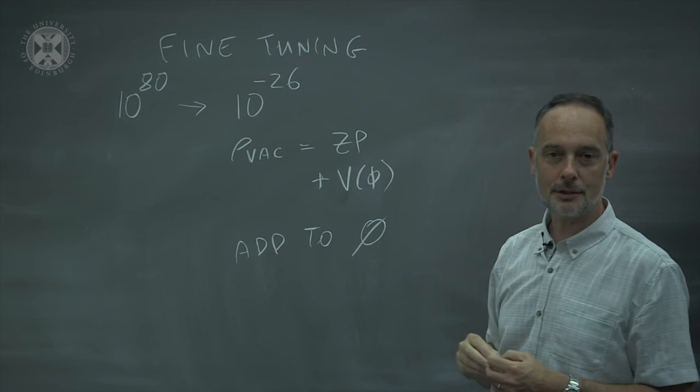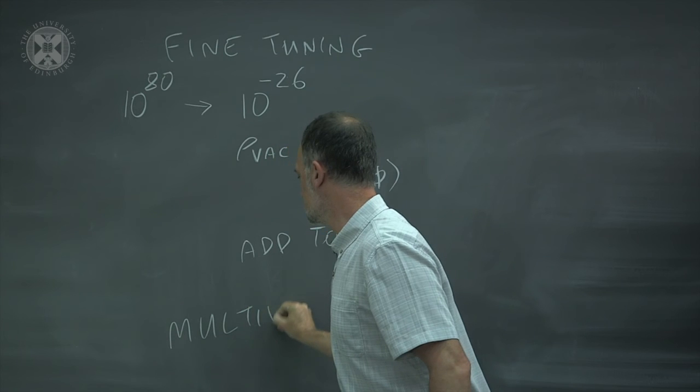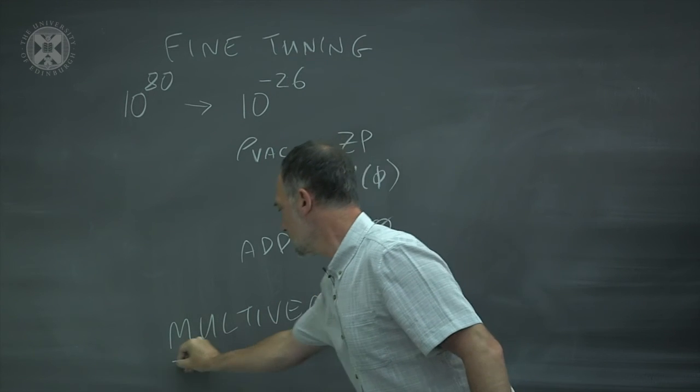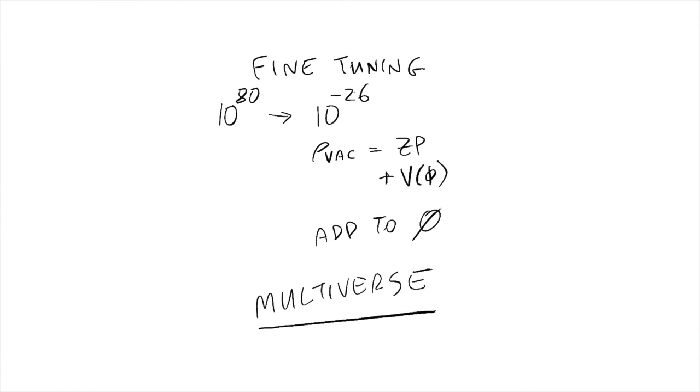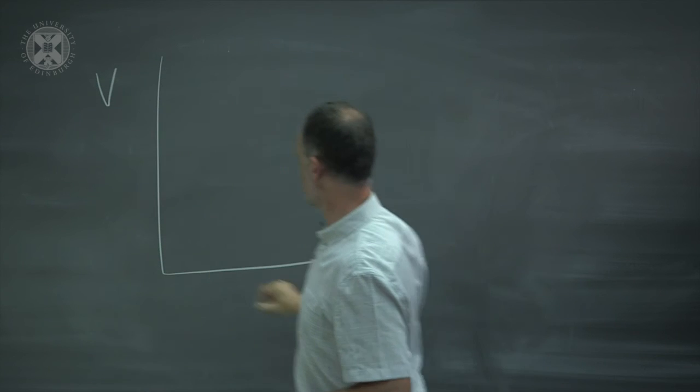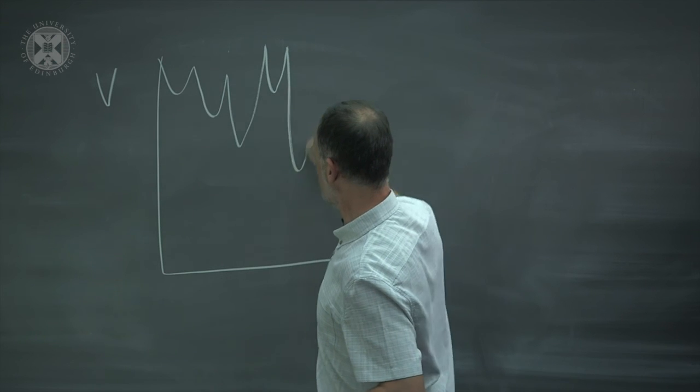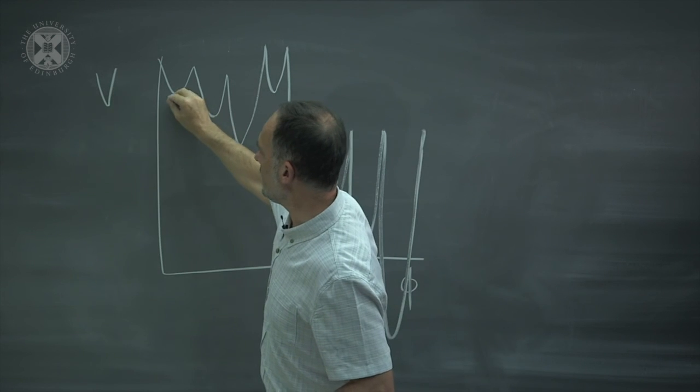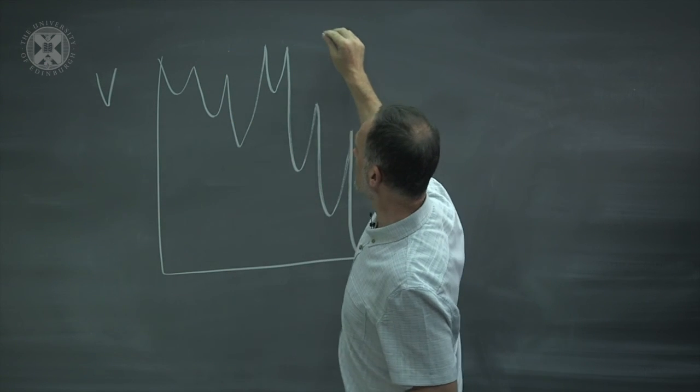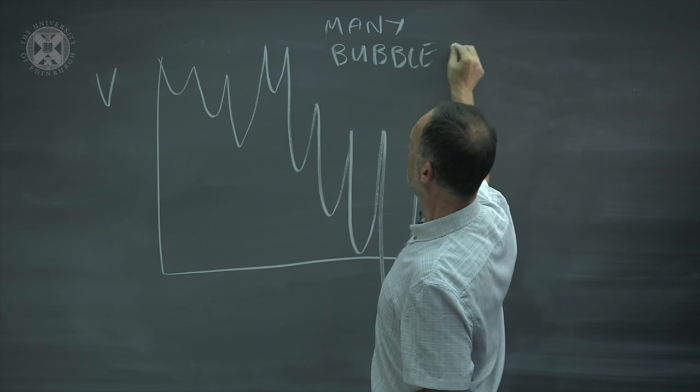Well, there is one suggestion for solving this, and as far as I know, the only one that works. Which is to say that rather than living in a universe, we live in a multiverse. So to see how this could work, let's imagine a more complicated potential, one with lots of different minima. And imagine that each of these minima corresponded to a different inflationary bubble.